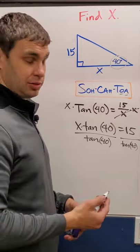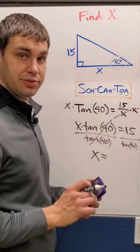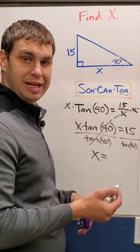Let the calculator do the rest of the work because on the left side, that cancels to give us X. So we have to type in 15 divided by tangent of 40, which equals 17.88.